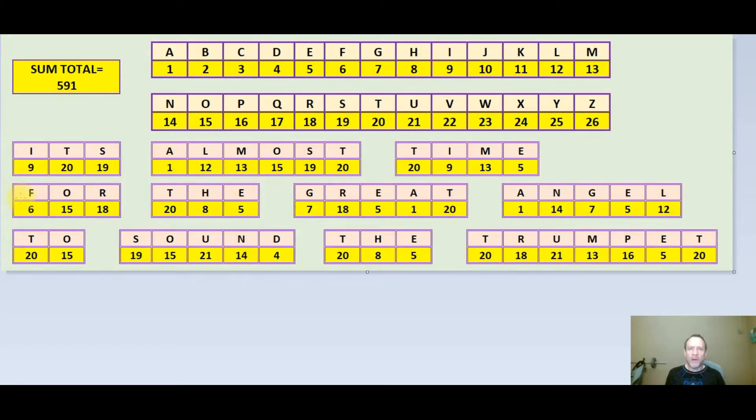According to the English alphabet, in the ordinal value of the letters, A having a value of 1, Z having a value of 26, the following messages will have a sum total of 591. It's almost time for the great angel to sound the trumpet. The sum total letter value of this message is 591.